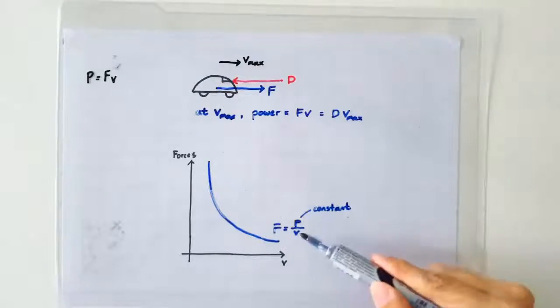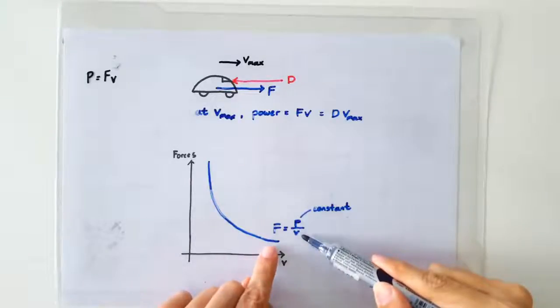This means that at low speed, the engine can deliver a large forward thrust, but at high speed, the engine can only deliver a small forward thrust.